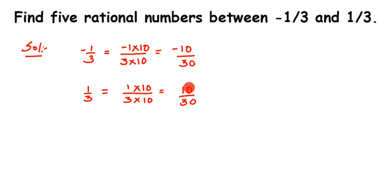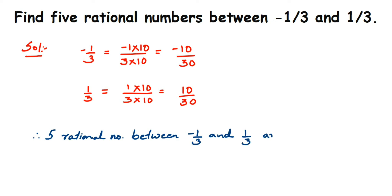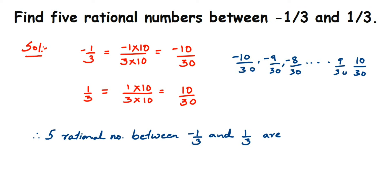Between minus 10 and 10 we have minus 9 by 30, minus 8 by 30, and so on up to 9 by 30. We can take any five rational numbers from there. So, the five rational numbers between minus 1 by 3 and 1 by 3 are: minus 9 by 30, minus 8 by 30, minus 7 by 30, 1 by 30, and 2 by 30. Remember, don't include minus 10 by 30 or 10 by 30 themselves.